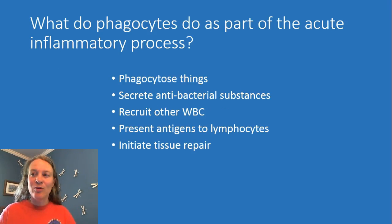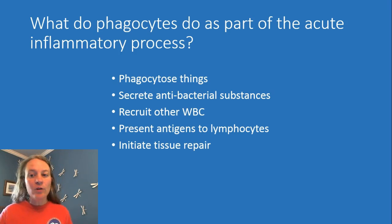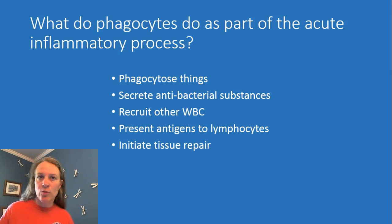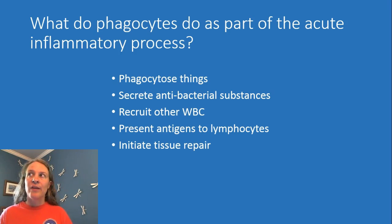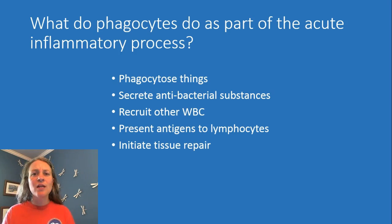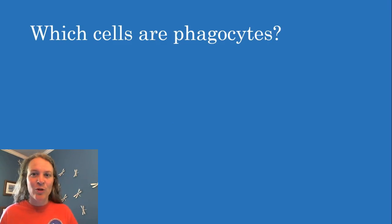Phagocytes in general do a number of different things. Of course, we know that they phagocytose things, including bacteria, damaged cells, immune cells, etc. But they also secrete antibacterial substances, recruit other white blood cells to the area, present antigens and initiate the adaptive immune response, and they also help initiate tissue repair and can dampen the inflammatory response. So these cells are very important not just because they're phagocytes, but they have all these other functions as well.